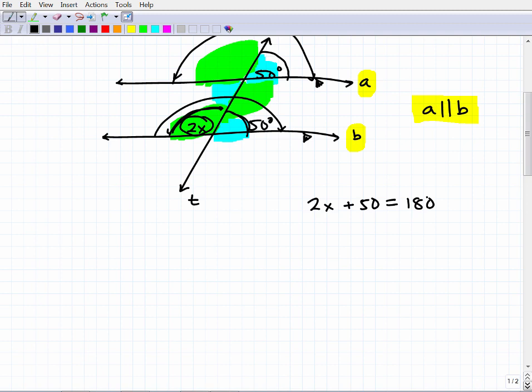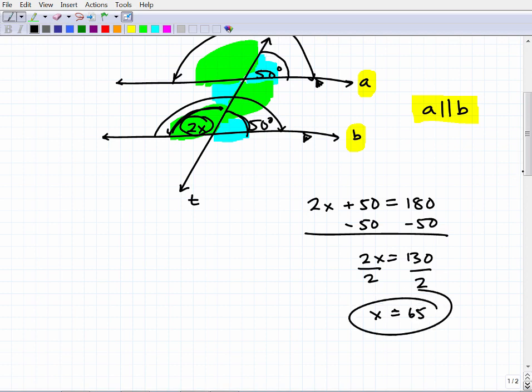OK. All right. Let's go ahead and solve it. So what we're going to do is subtract 50 from both sides of the equation. And I'm going to get 2x is equal to 130. And then to solve for x, I need to divide both sides of the equation by 2. So 130 divided by 2, of course, is 65 degrees. Let me just double check that. Yes, indeed, that is 65. So x would be equal to 65.